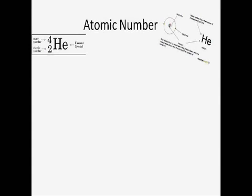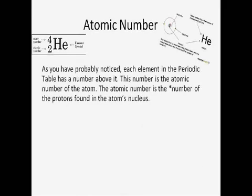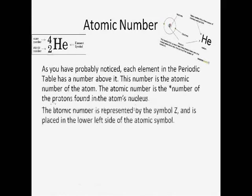The atomic number. As you have probably noticed, each element in the Periodic Table has a number above it. This number is the atomic number of the atom. The atomic number is the number of the protons found in the atom's nucleus. The atomic number is represented by the letter Z, and is placed in the lower left side of the atomic symbol.